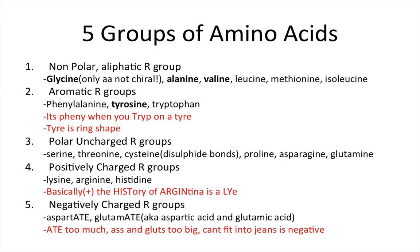In this slide I'm going to list the amino acids in each group. I don't want you to get too hung up on memorizing which amino acids are in which group, but I will provide a couple of memory aids to make it easier. Nonpolar aliphatic R groups include glycine — the only amino acid that is not chiral — as well as alanine and valine. In the aromatic group there's phenylalanine, tyrosine, and tryptophan. The way I remember this is: it's funny when you trip on a tire, and a tire is a ring shape.